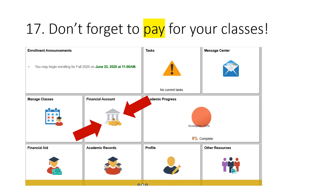Don't forget, payment is due at the time of enrollment. To see how much you owe and to make a payment online, go to your eServices homepage and click on Financial Account. If you need help with Financial Aid, contact the Financial Aid Department.